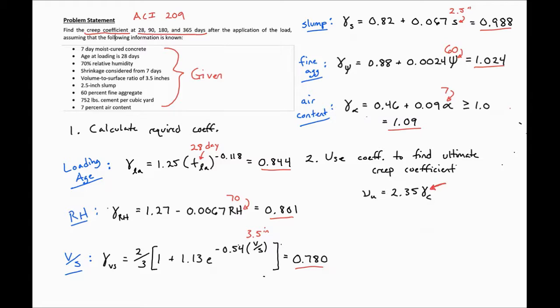We'll find our gamma factor here to be 0.582, then we can find our creep coefficient to be 1.367. This is our creep coefficient at ultimate, and this is what we'll use in our next step to find our creep coefficient over time.